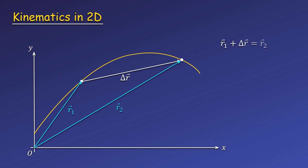Based on our rules for adding vectors graphically, we can see that adding our first position vector r1 and the displacement vector delta r gives the second position vector. Rearranging this formula, we get our equation for displacement as the final position vector minus the initial position vector.